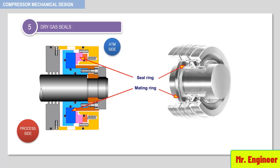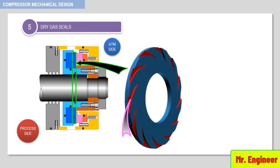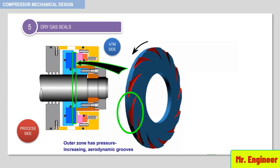The non-contact gap is maintained by a pressurized buffer gas or process system. The sealing face of the rotating seat has the outer zone machined with pressure-increasing aerodynamic grooves. This is where the gas enters.